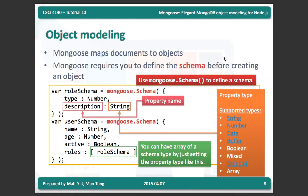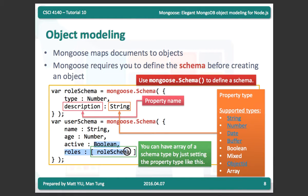To save something to the database, Mongoose maps documents to objects, but first you need to define the schema of the object. You define the schema using mongoose.Schema and list all the fields you want. For example, a user schema might have a name field of type String, an age of type Number, active as Boolean, and roles as an array — since a user may have multiple roles, you put the schema inside square brackets to specify an array.